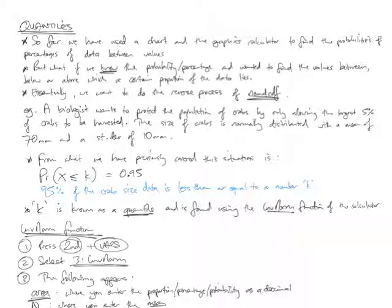An example of doing this might be our biologist wants to protect the population of crabs by only allowing the largest 5% of crabs to be harvested. The size of crabs is normally distributed with a mean of 70 mils and standard deviation of 10 mils. So, what would be the largest crabs kept in this case? If you're removing the top 5%, you're finding the value, the length of crab that would be left if the top 5% are removed.